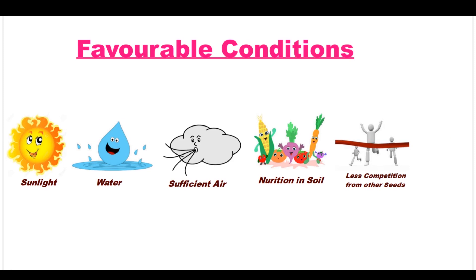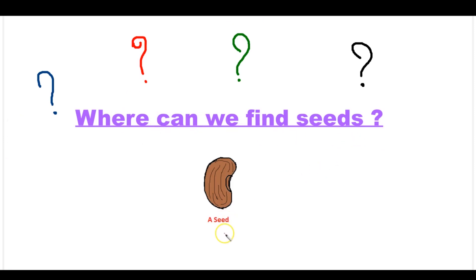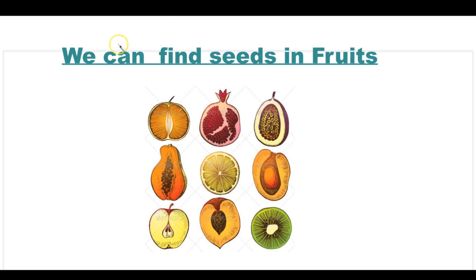Now we understand how a seed grows into a new plant. But children, do you know where can we find seeds? Have you ever seen seeds in your daily life? Of course, you might have seen them. We can find seeds in fruits. Here are some examples of a few fruits in which you can find seeds. These are all seeds present inside the fruits.